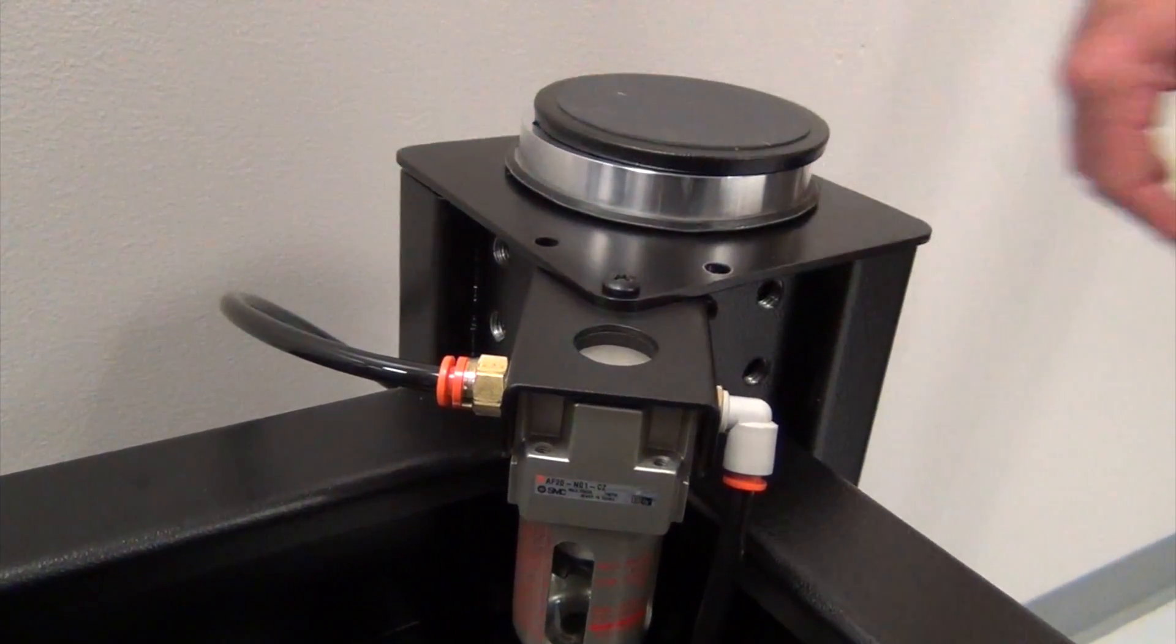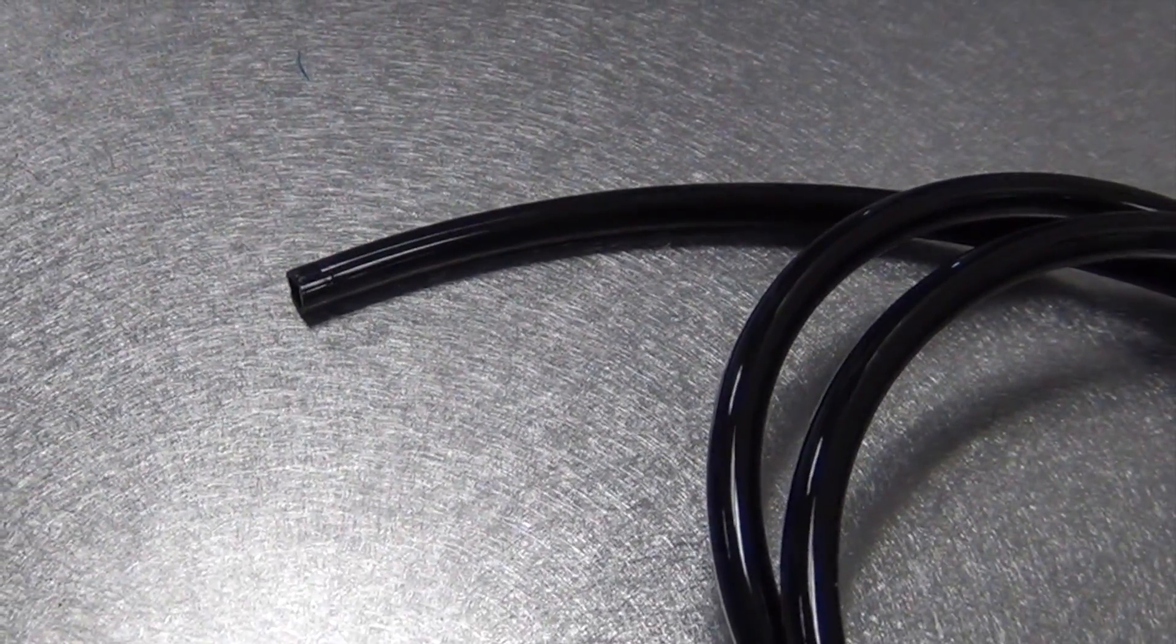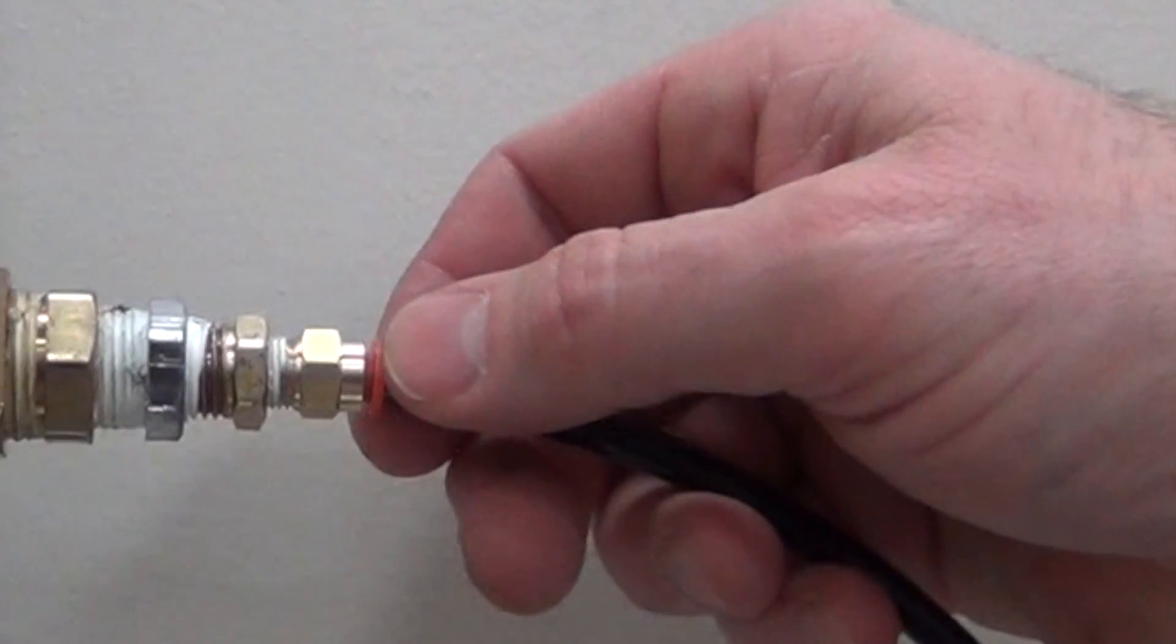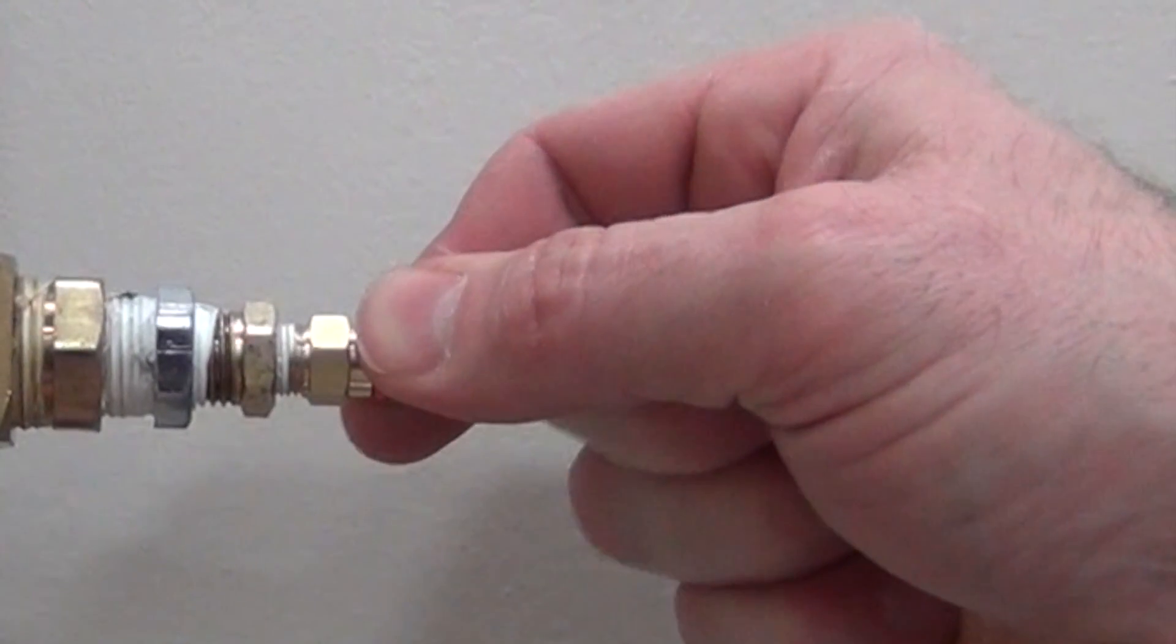If the tubing needs to be cut, it must be clean and square to the ends, not at an angle. To remove the tubing, press the lock connector, push the orange ring in towards the fitting, and pull the tubing out.